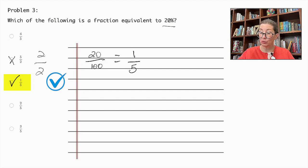That would make 2 out of 5 40%, 3 out of 5 60%, and 4 out of 5 80%. So the correct answer is definitely 1 out of 5.